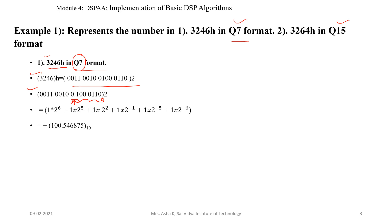Here we have bit positions 0 through 6, where position 6 corresponds to 2 to the power minus 1, position 5 to minus 5th bit, and position 6 to minus 6th bit. When we convert, we get: 1 into 2 to the power 6, plus 1 into 2 to the power 5, plus 1 into 2 to the power 2, and for the fractional part: 1 into 2 to the power minus 1, plus 1 into 2 to the power minus 5, plus 1 into 2 to the power minus 6. After simplification, we get 100.546875 in decimal representation.